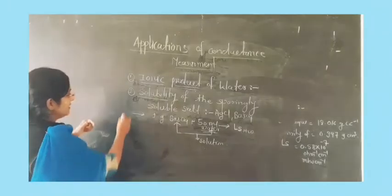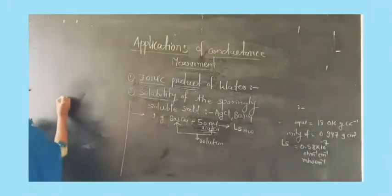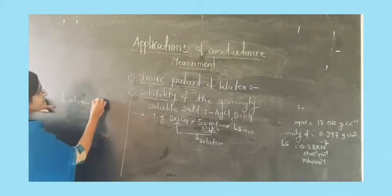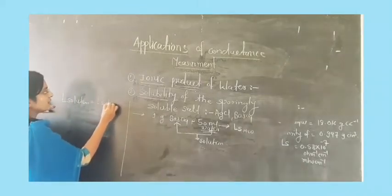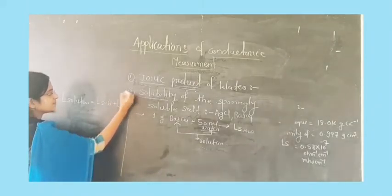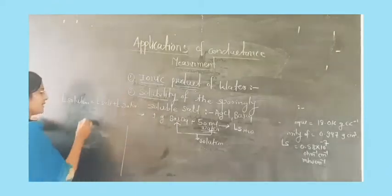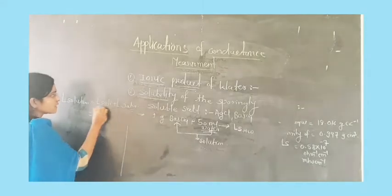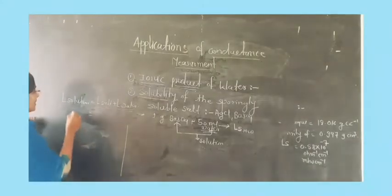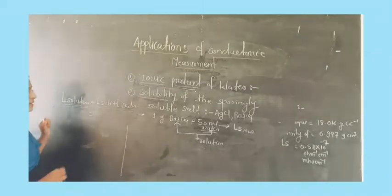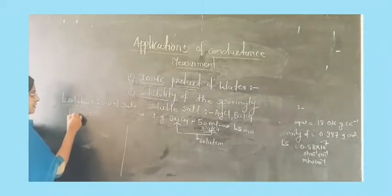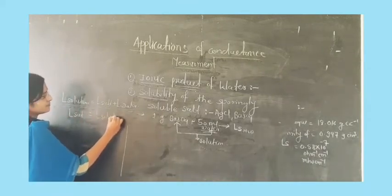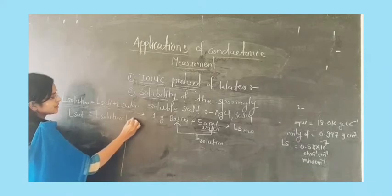The next step: the conductance of the solution is equal to conductance of salt plus conductance of water. We have already measured the conductance of water. We do not know the conductance of salt because it is sparingly soluble, but we know the conductance of the solution. Therefore, I am able to find out the conductance of salt: L_salt = L_solution minus conductance of water.